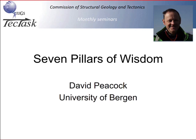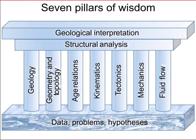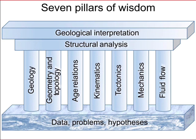I'm going to talk about what we call the seven pillars. These are different types of geological or structural geological analysis, and I think they are very useful for helping to organize structural geology. At the bottom you see that if you start off with data and some hypotheses you want to test, there are these different types of analysis you can undertake: basic geological description, geometry and topology, age relationships, kinematics, tectonics, mechanics, and fluid flow. These different types of analysis are really important because they help you understand structural analysis and make geological interpretations.